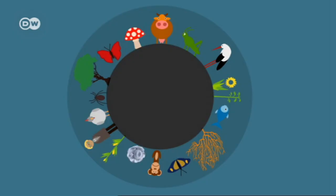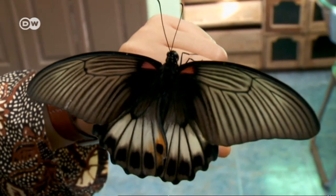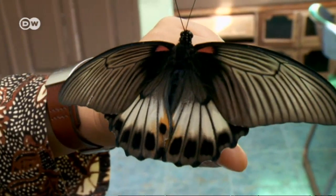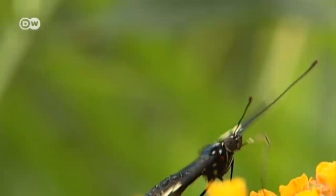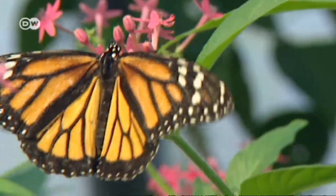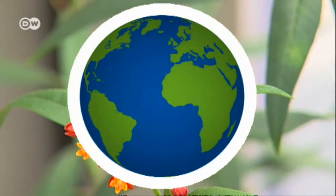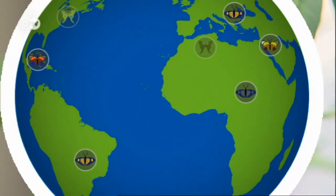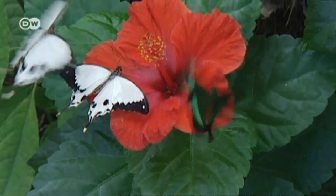Animals, plants, fungi and microorganisms — but do we need them all? Butterflies, for example: biologists have identified around 180,000 different species. They can be found here, and here, and here too. They look very different and are also different in terms of many of their genes.